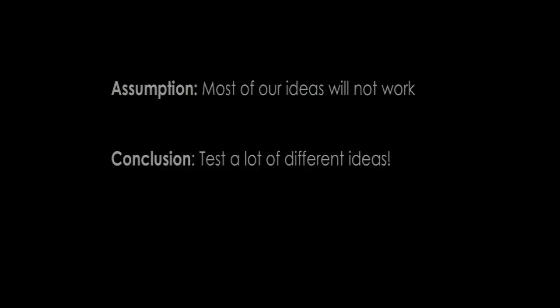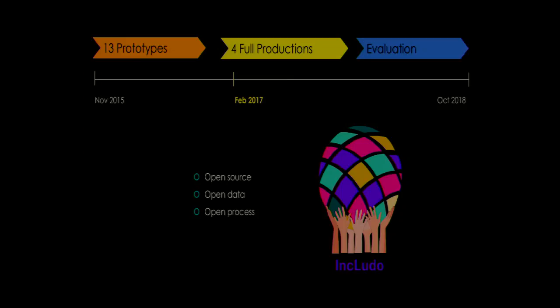So let's go on to games. When we started this project making games to promote diversity, we started with the assumption that most of our ideas were not going to be very good and that we needed to try a lot. We structured our project to start with prototypes, then cut them down to just four. All our projects are open source, we're going to put out all our data as open data with all the analytics we get back, and the process itself is open — we're trying to put it all on our blog so people can reproduce our ideas and try different things.